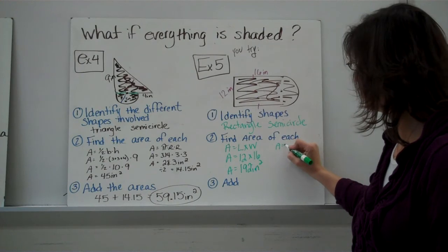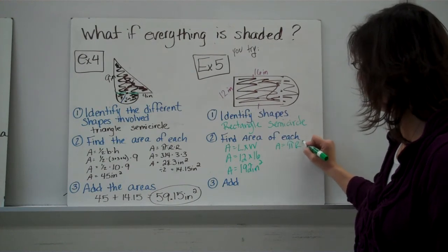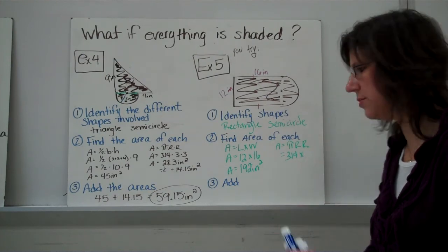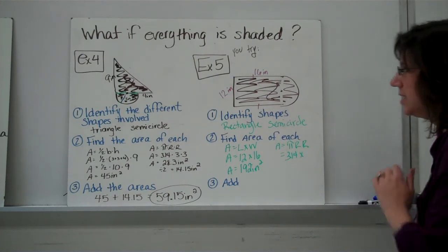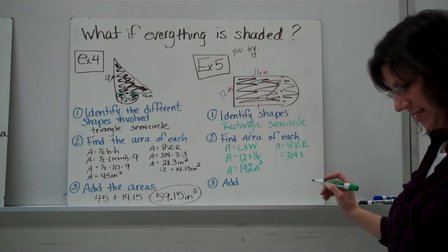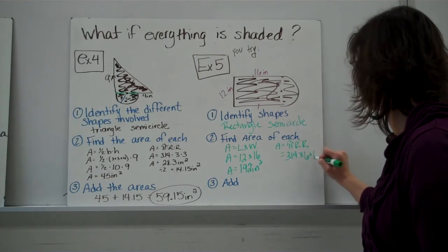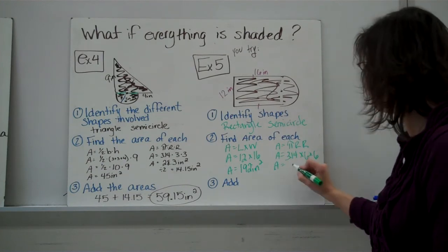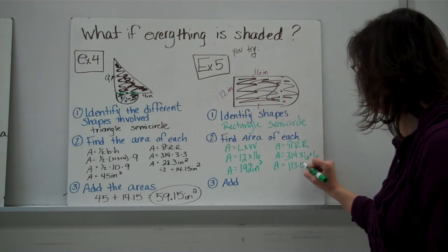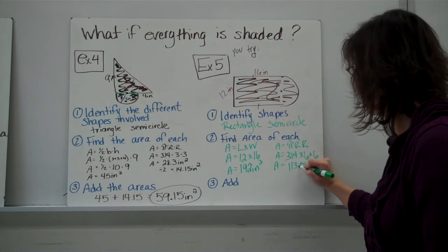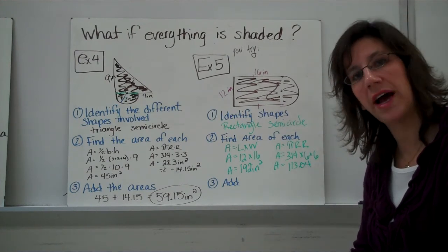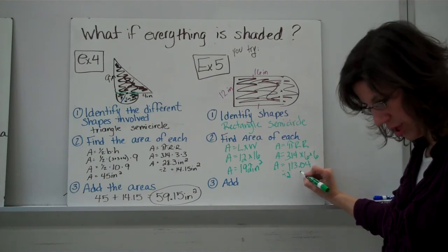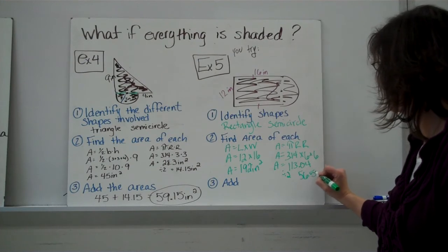And, then the area of the semicircle. Three point one four times. What did you get as the radius? Well, the square. Did you get six? Six times six. So the area of the circle, the full circle, would be 113.04. But don't forget, this is a semicircle, so we need to divide it by two. Divide it in half so you can get half of that circle, and you should get 56.52.